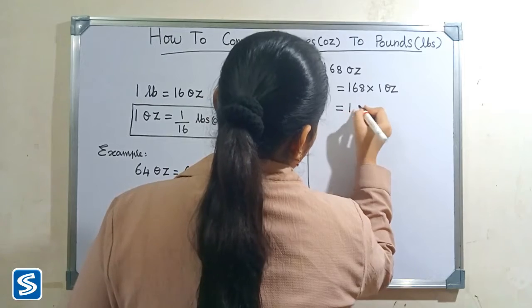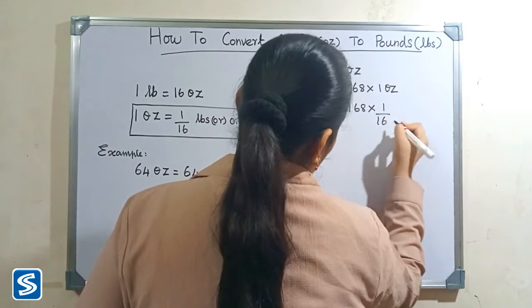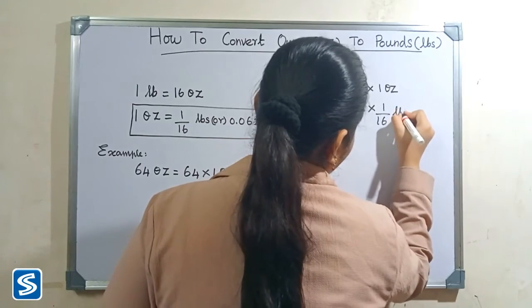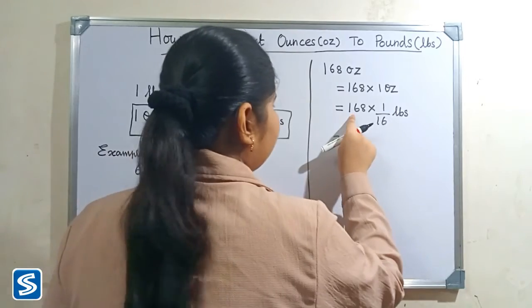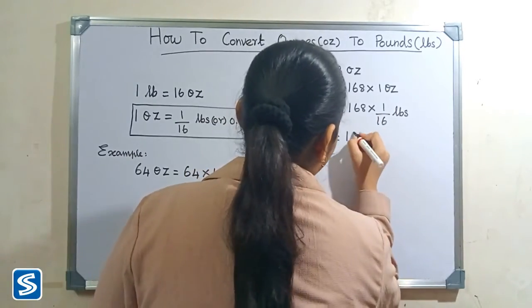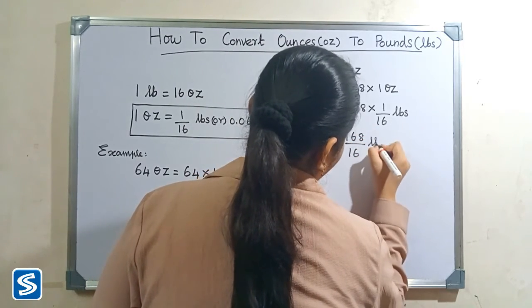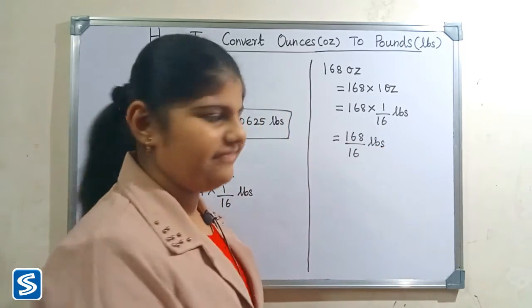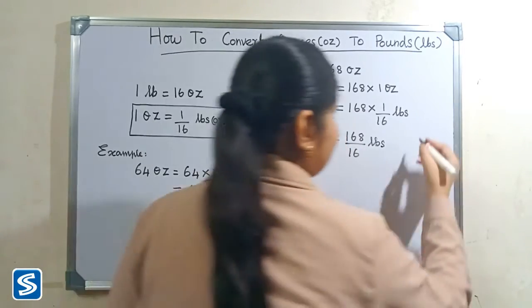So, 168 × 1 will be 168. So, 168 ÷ 16 pounds. Now we have to divide 168 by 16 pounds. Come on, let's divide it.